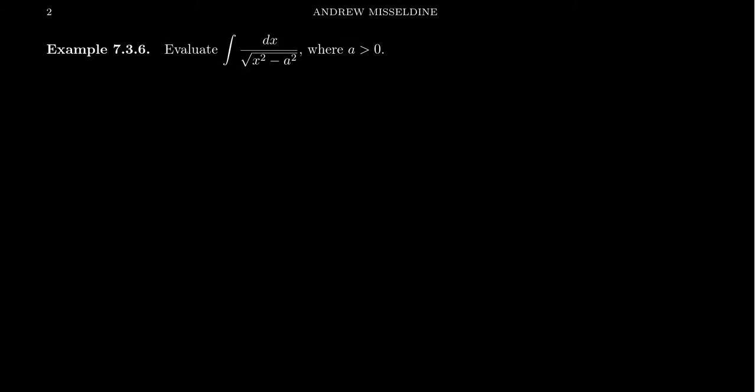Let's take a look at the integral of dx over the square root of x squared minus a squared, where a is just some unspecified positive number. The fact that it's unspecified, we still are going to treat it like a constant, but we don't know what that constant is.